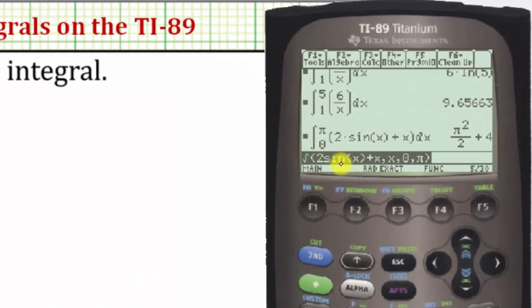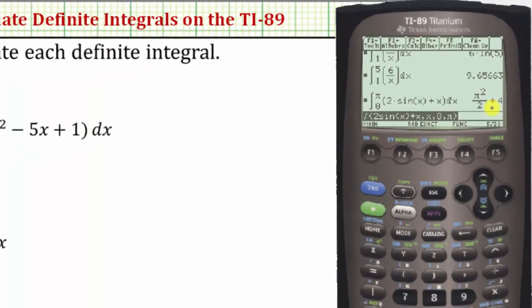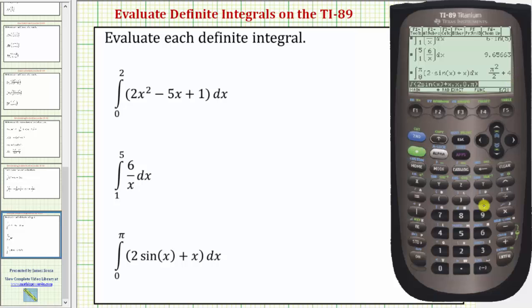Again, notice how we have the exact value of the definite integral. Pi squared divided by two plus four. To get the decimal approximation, we press diamond, enter. I hope you found this helpful.